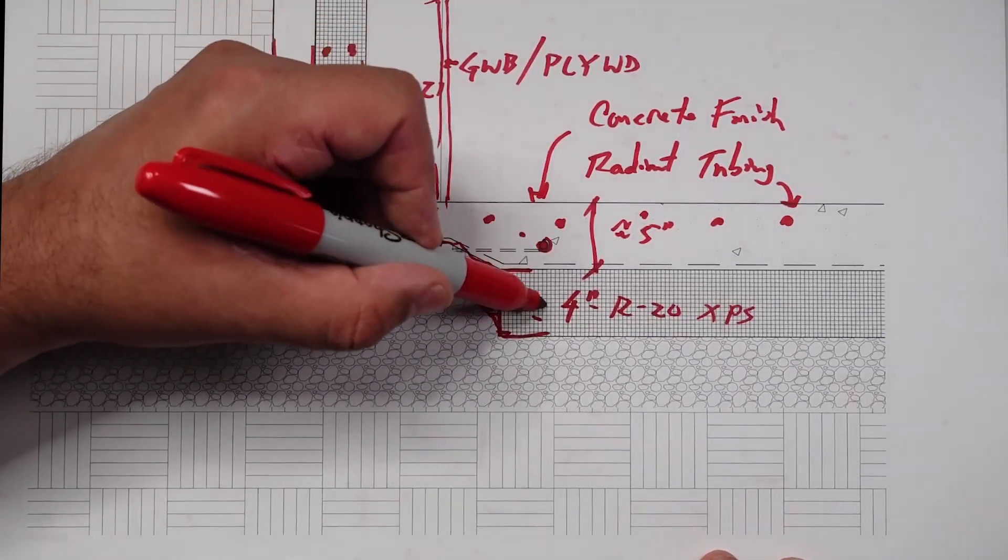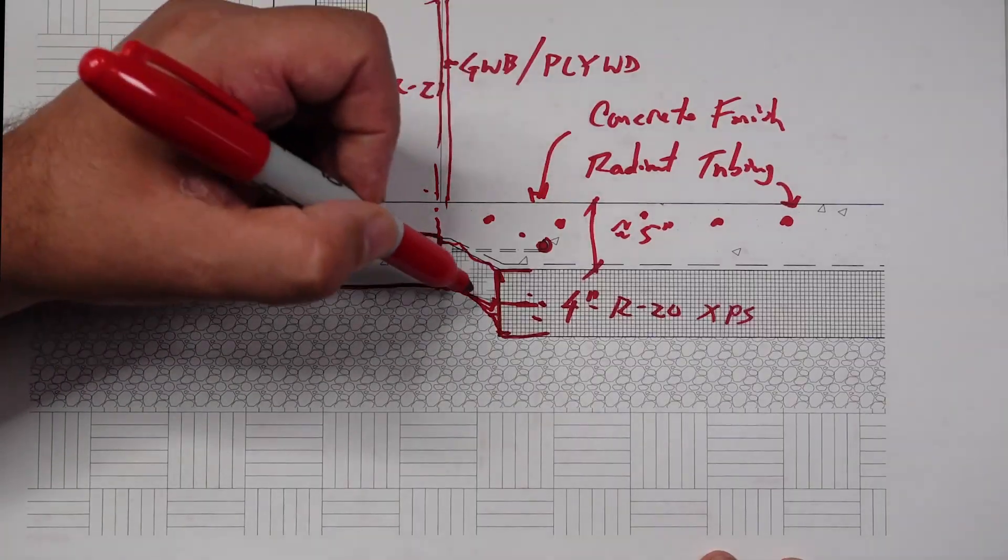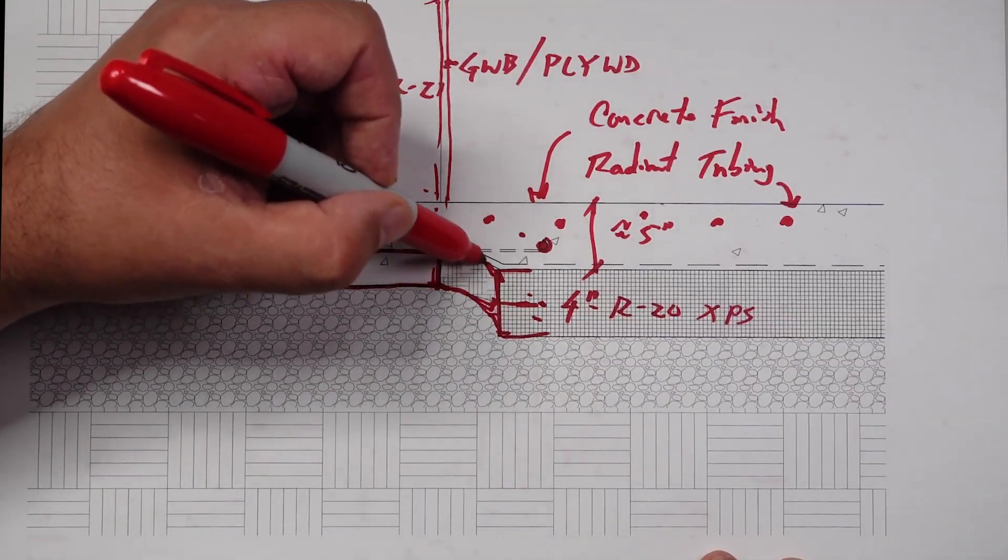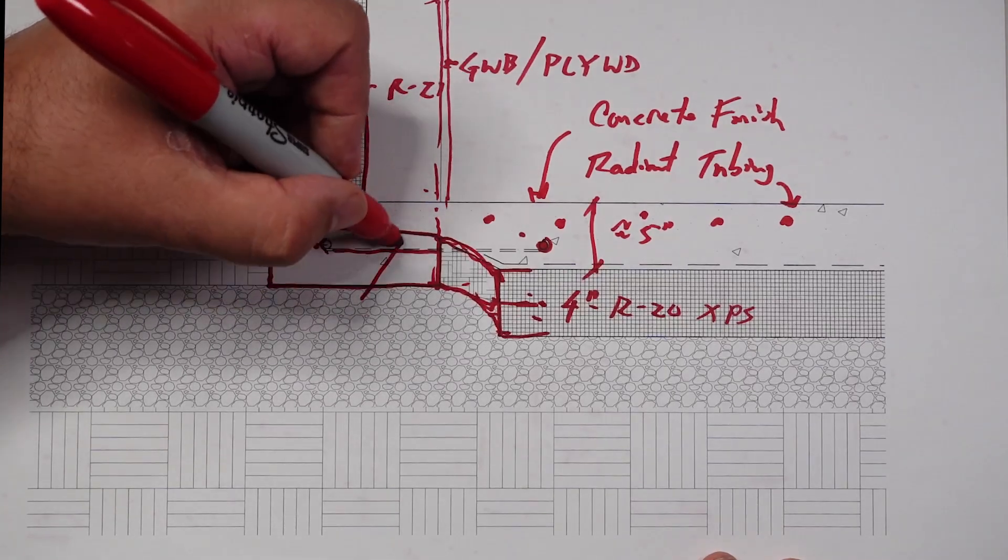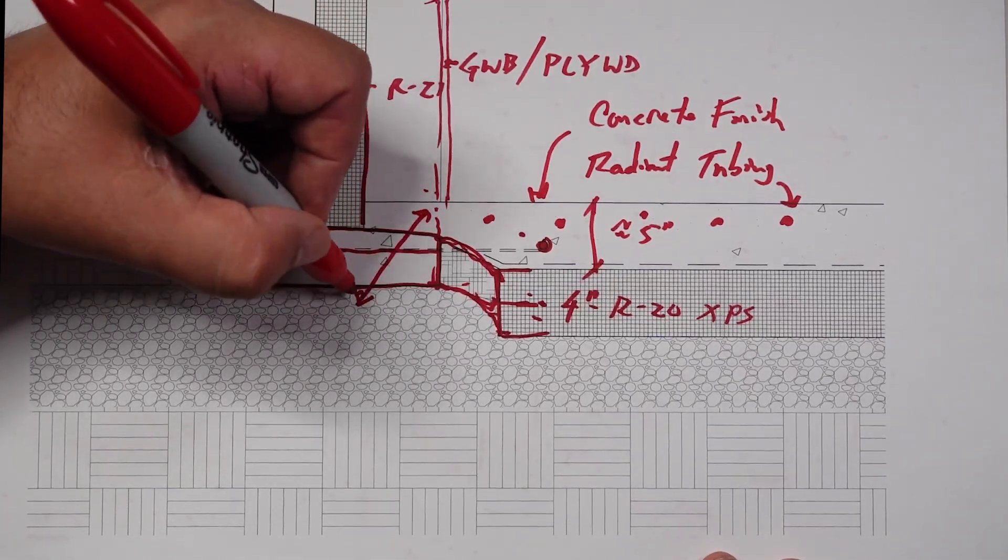We did a spray foam connector here. The homeowner is doing a bunch of this work himself, so he put in the four-inch XPS and then he had this little area. He just went around and spray foamed it to make that connection. Now we have a little bit of a thermal break here, yes we do.